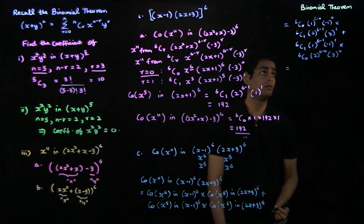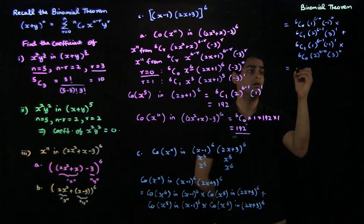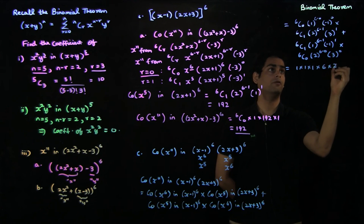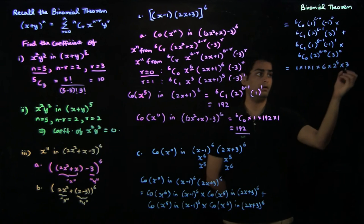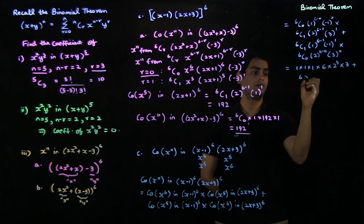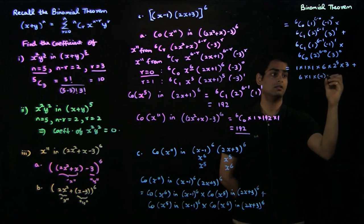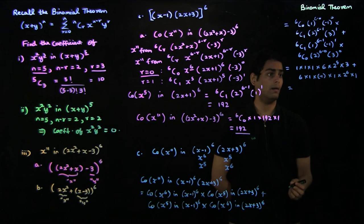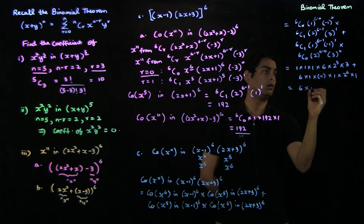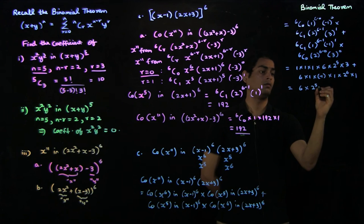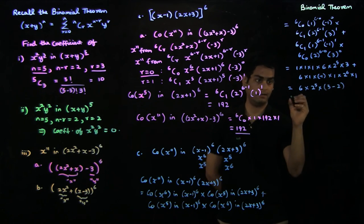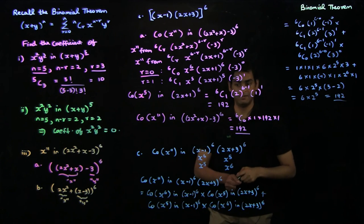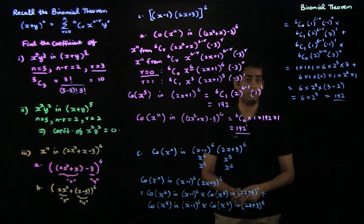Evaluating the sum: the first term is 1 · (6 · 2^5 · 3) = 576, and the second term is (6 · 1 · (−1)) · (1 · 2^6 · 1) = −6 · 64 = −384. Combining: 576 − 384 = 192. So once again, the coefficient of x^11 in (2x² + x − 3)^6 is 192.